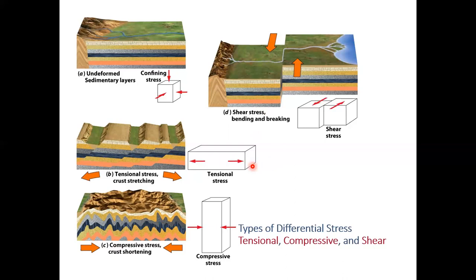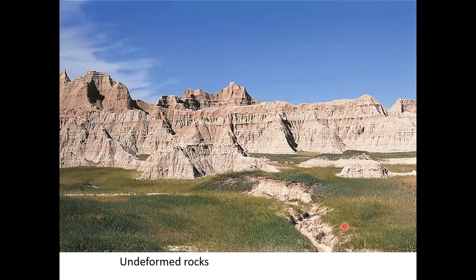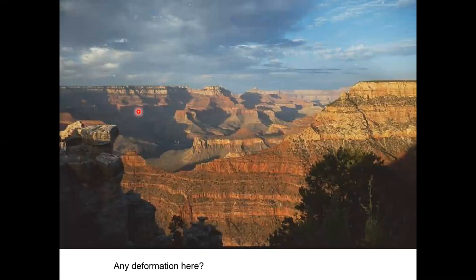These undeformed rocks show no displacement in their layers — the lines go straight across with no offset, though there may be missing parts from weathering and erosion. We see this in the Grand Canyon, where rock layers can be tracked for miles and miles. Here you don't see folds or faults, though you might see some joints or fractures.